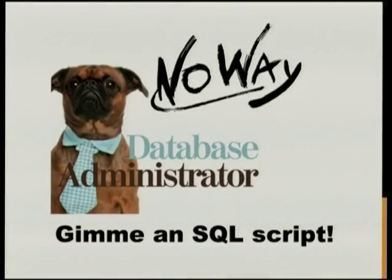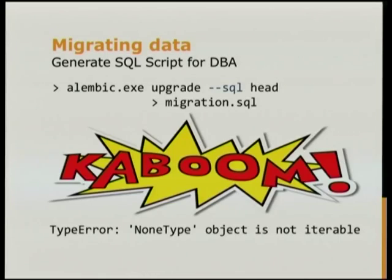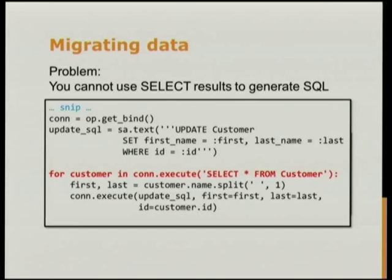In some workplaces, you need to get your DBA to migrate your databases. You can't pass them your script and say 'run this Python against the database please' — they're going to say no way. But that's all right. Alembic knows about database administrators. There's a simple SQL option, and instead of actually migrating your database, it just writes your script. Easy peasy. Not. NoneType object is not iterable — we don't have a database connection, we're just generating a script, so we can't iterate over the rows of the table.